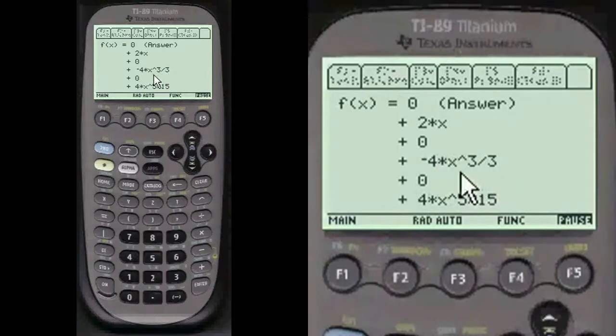2X minus 4X cubed over 3 plus 4X to the 5th over 15. Pretty neat, huh?